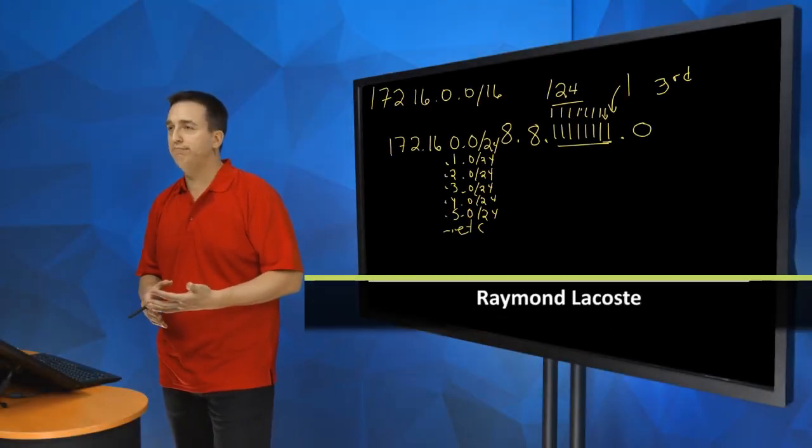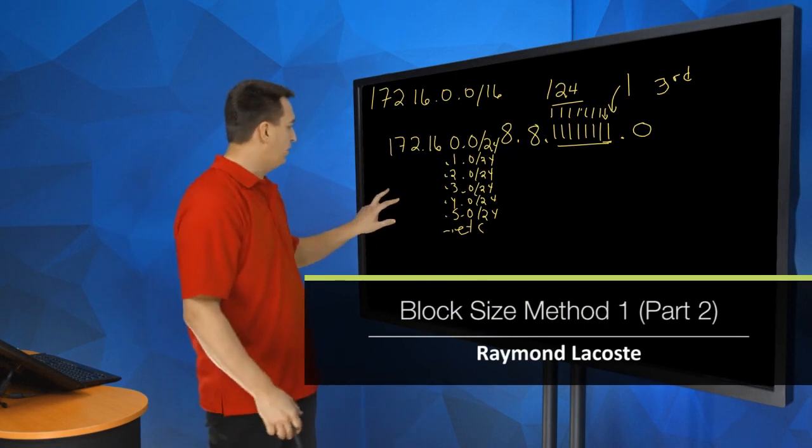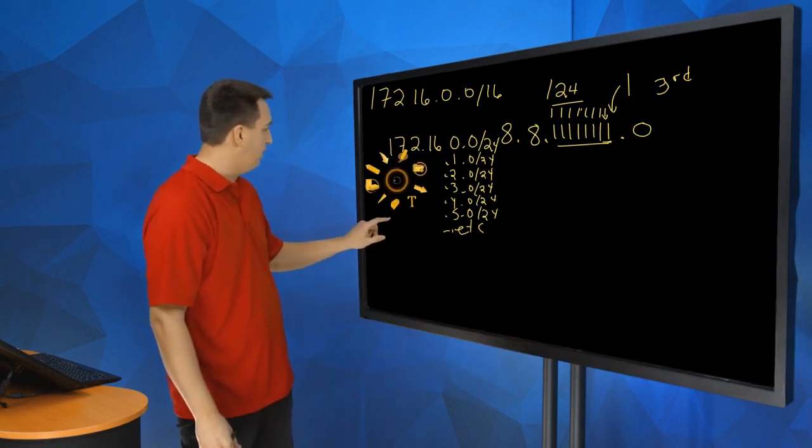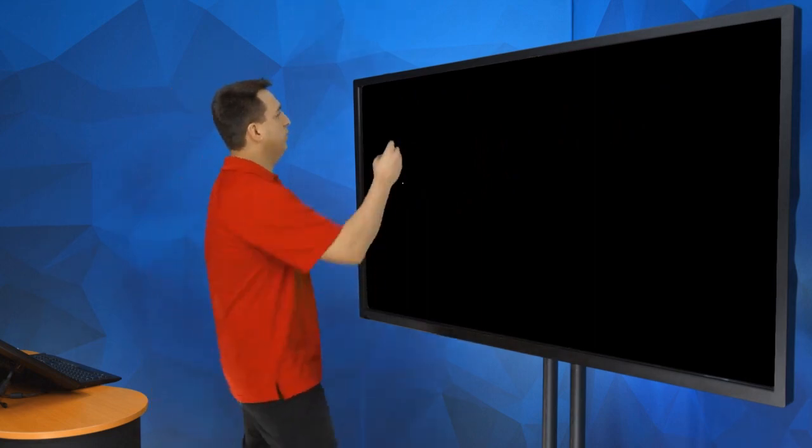Let's do another example. I think another example would be very valuable in this particular case. Let's pick a different address now, let's go with 192.168.1.0/24. So we're starting off with a /24 in this example here.